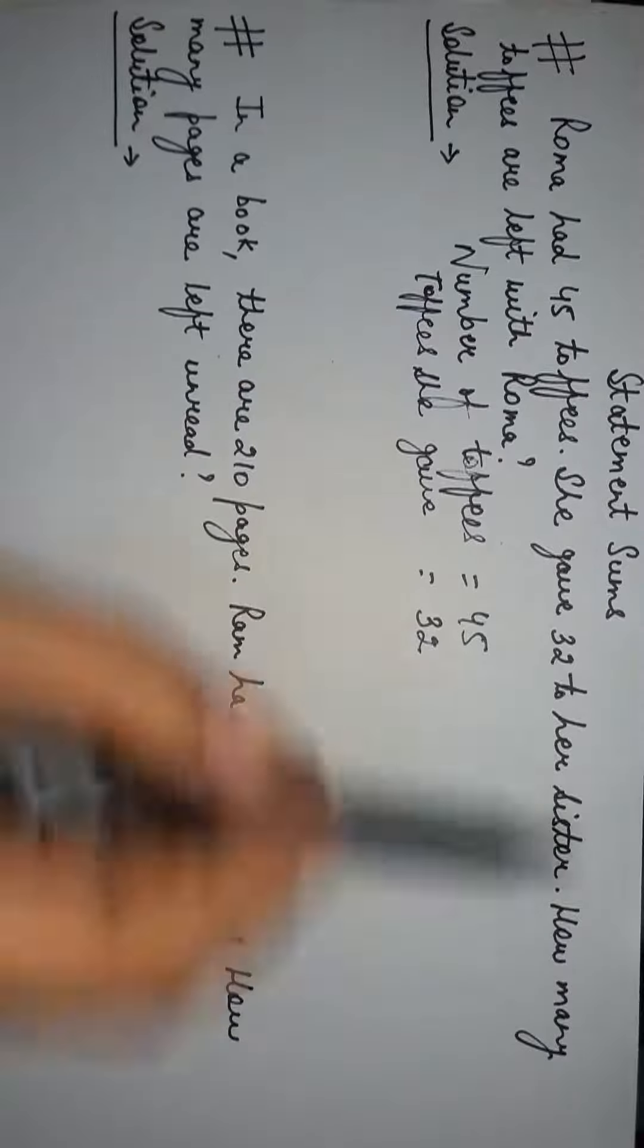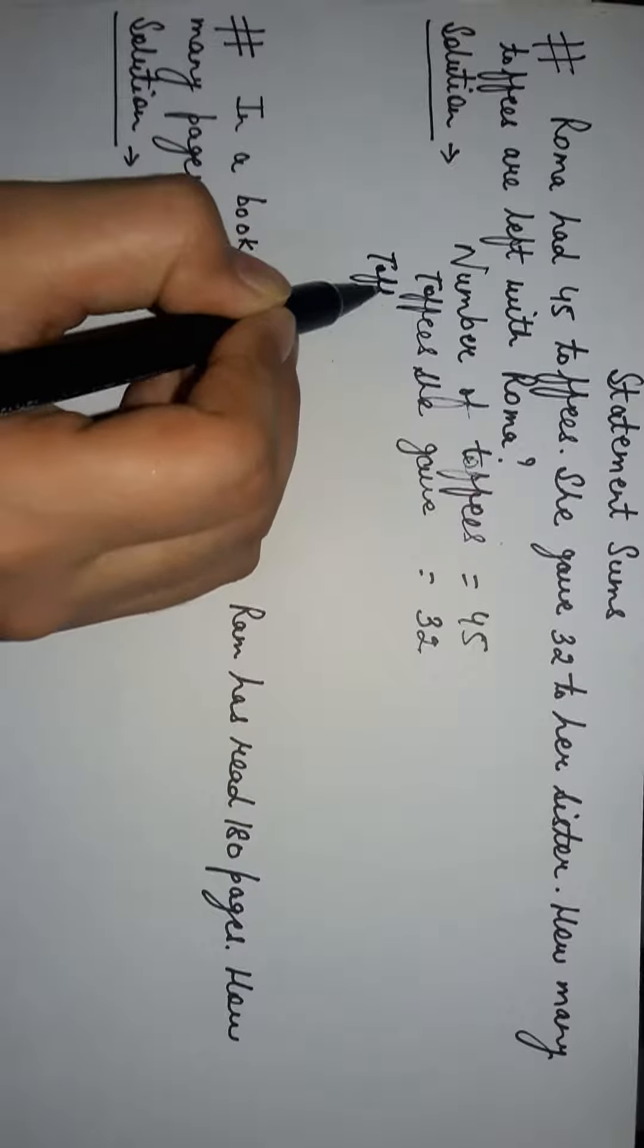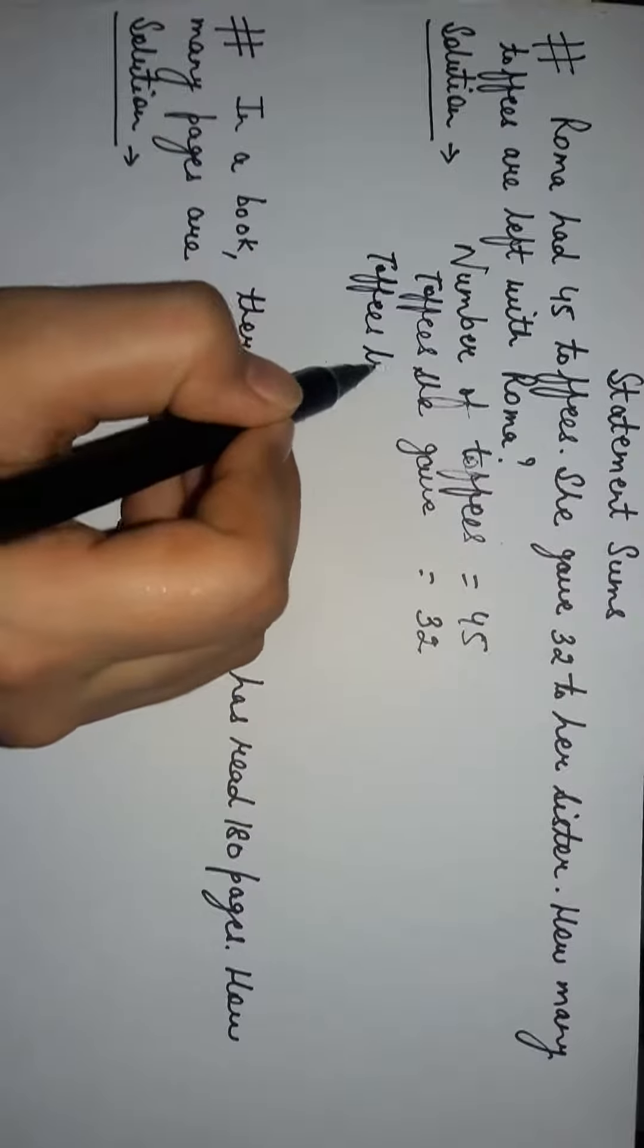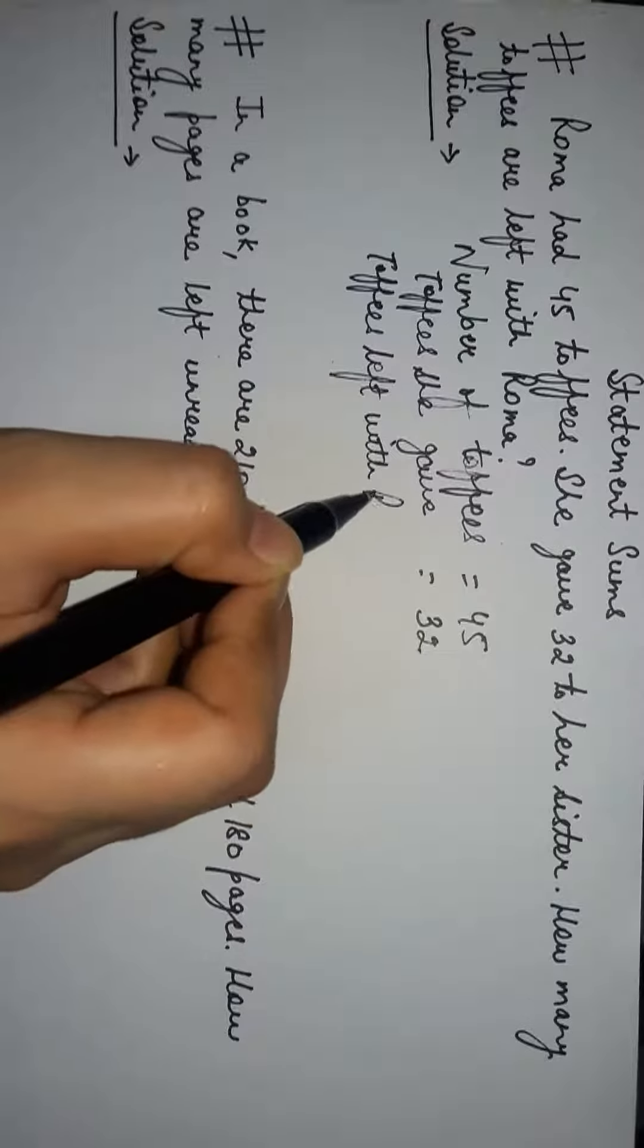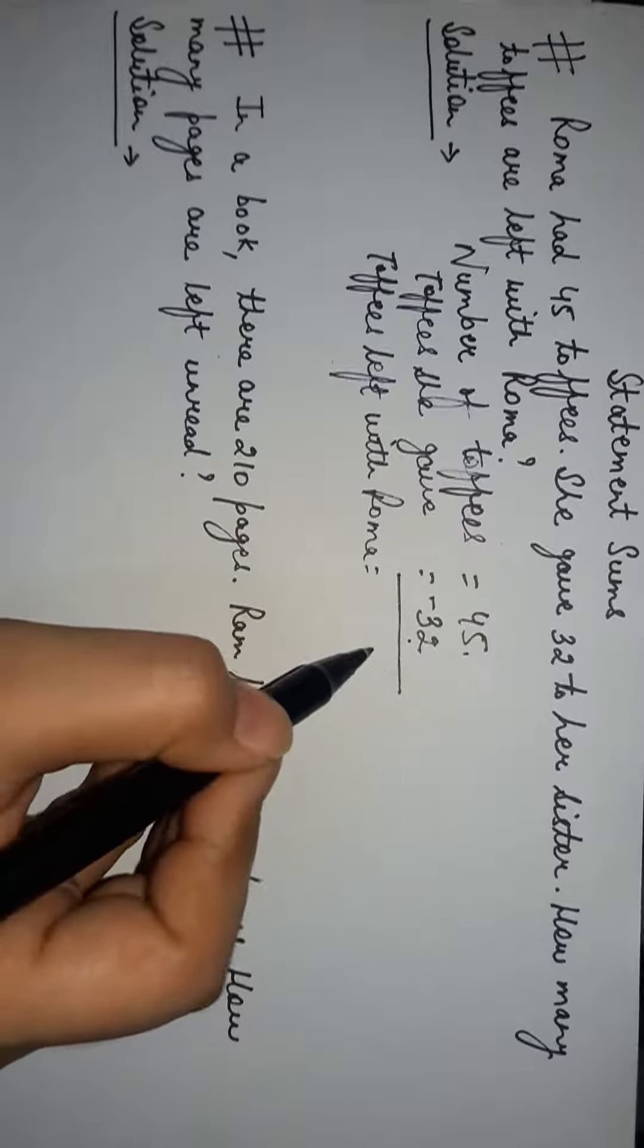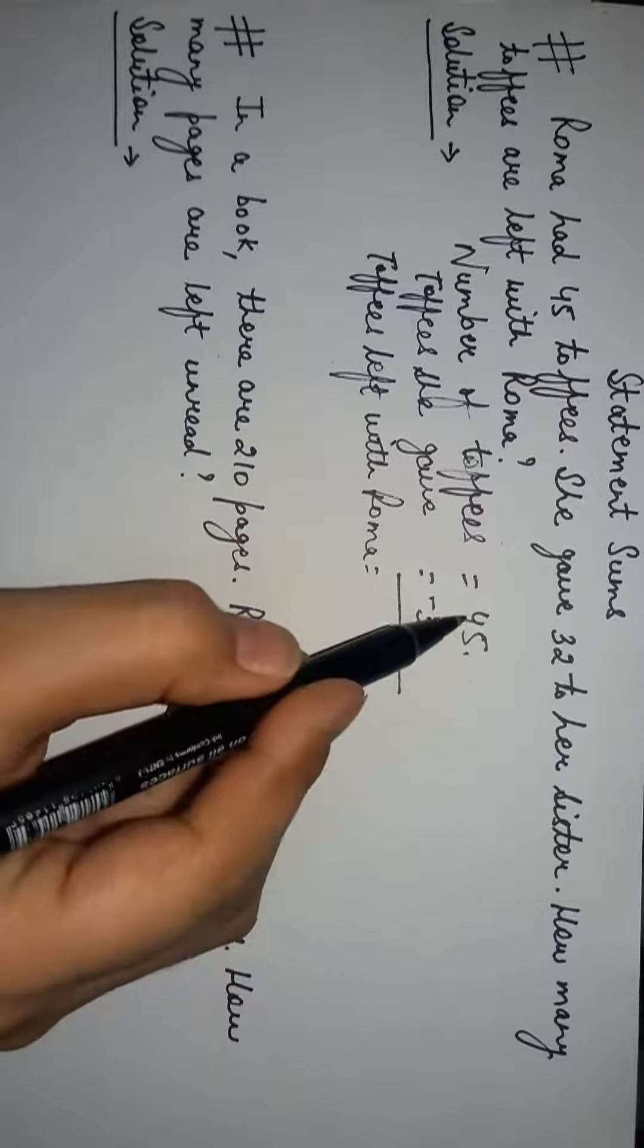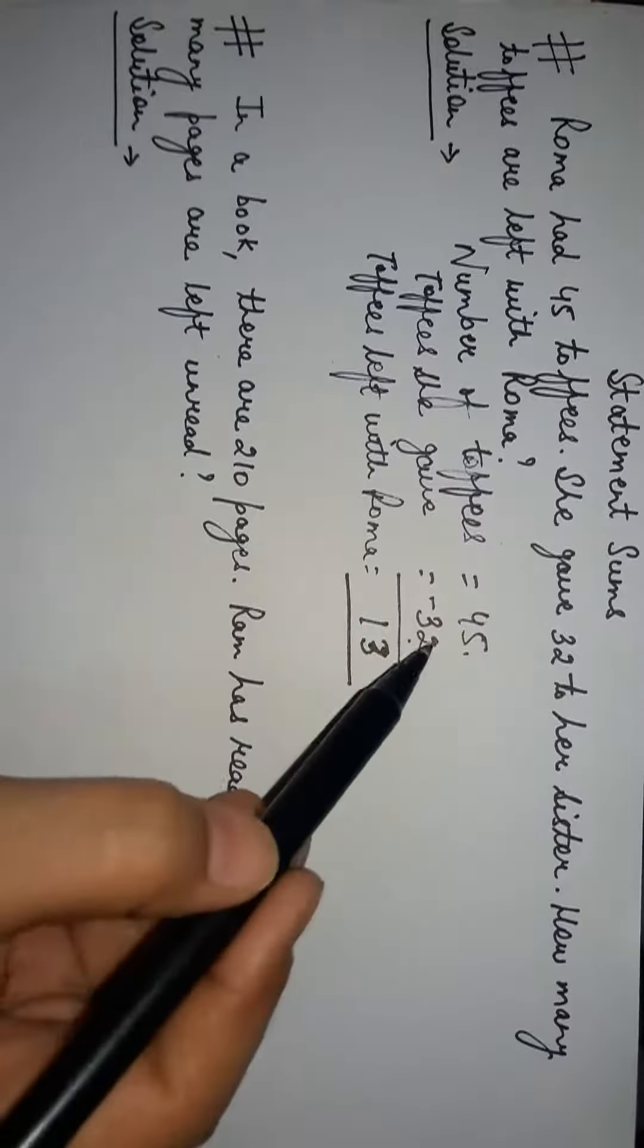What we need to find? How many toffees are left with Roma? Toffees left with Roma. We subtract these numbers: 5 minus 2 equals 3, and 4 minus 3 equals 1, so what will come here is 13.